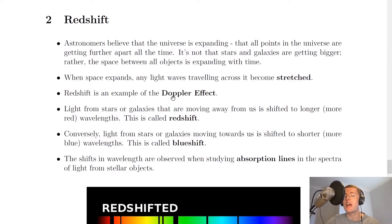Redshift is an example of the Doppler effect. We've already seen redshift for sources of sound waves, but now we're looking at redshift for light waves. Light from stars or galaxies that are moving away from us is shifted to longer or more red wavelengths, and this is called redshift. Conversely, light from stars or galaxies moving towards us is shifted to shorter or more blue wavelengths, and this is called blueshift.